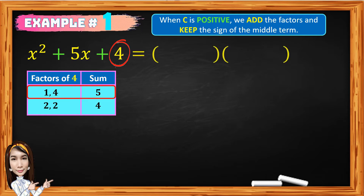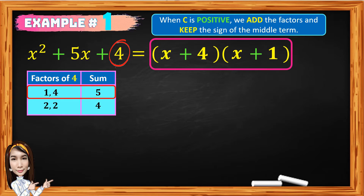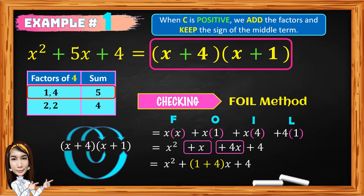We are going to write the factors inside the two pairs of parentheses. The factor of x squared is x times x. The factors 1 and 4 are both positive. So the factors of x squared plus 5x plus 4 are the quantity x plus 4 times the quantity x plus 1. To check, we can use the FOIL method, and the product is x squared plus 5x plus 4. And you got it correct.